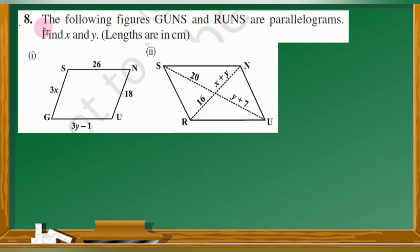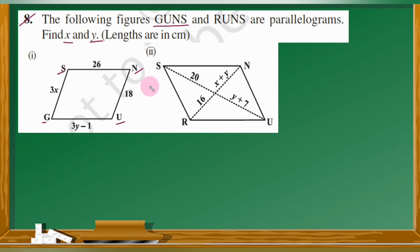Question number 8: The following figures GUNS and RUNS are parallelograms. Find X and Y. So here are two figures. The first parallelogram is named GUNS and the second is named RUNS.